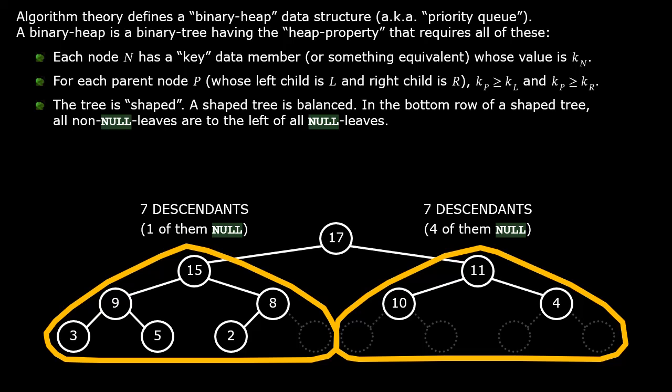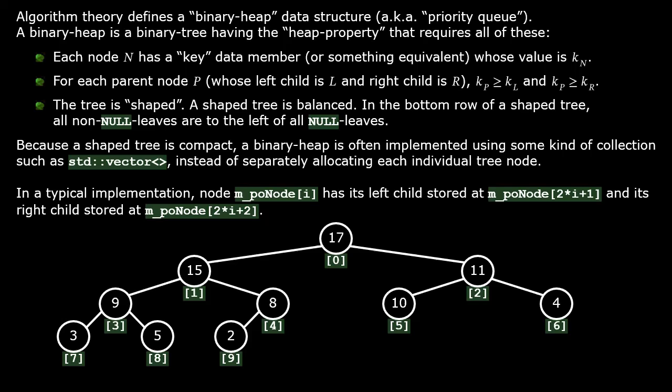The heap property requires that your tree is shaped, and a shaped tree is a balanced tree. In a balanced tree, each parent has approximately the same number of descendants on its left hand side as on its right hand side. The exception is that the bottom most row does not need to be completely full. This allows you to have any tree size, not only the powers of two. In a shaped tree, the part of the bottom row that does have data must be all the way to the left.